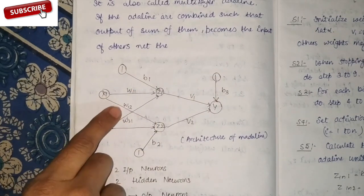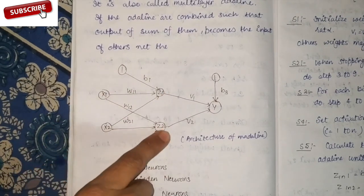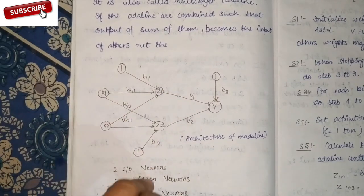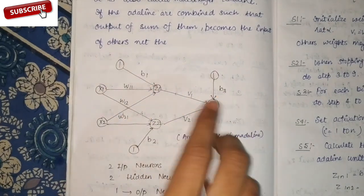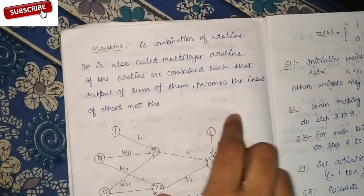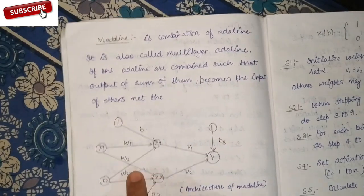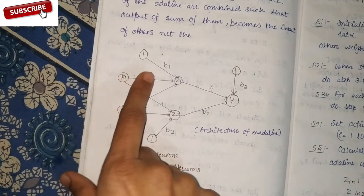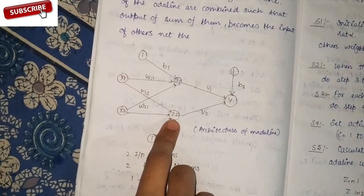And W1, W2 — these weights are between the input layer and hidden layer. And there are also weights between the hidden layer and output layer. You can see here the architecture. W1, W2 are the weights between the input layer and hidden layer, and these two are the weights between the hidden layer and output layer.